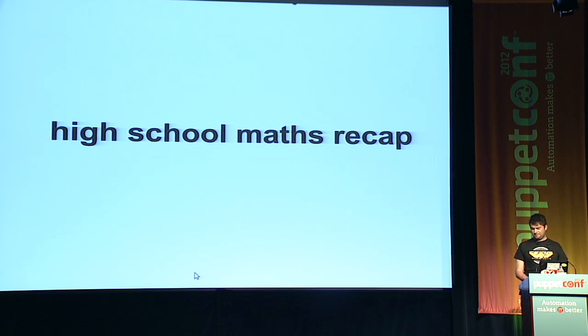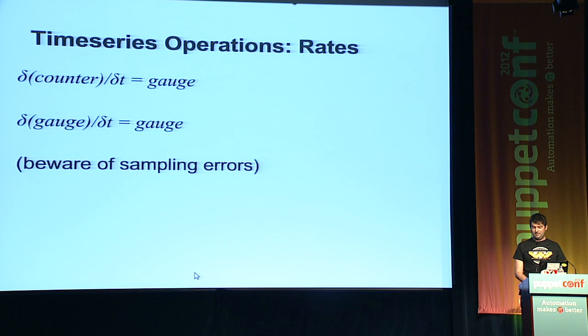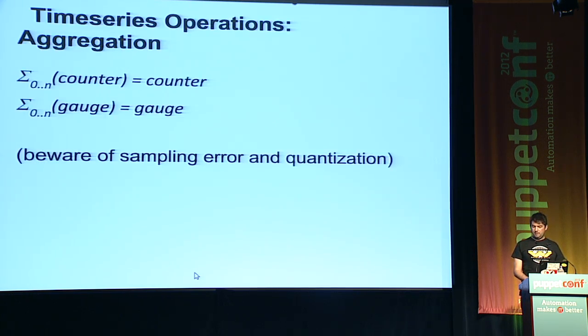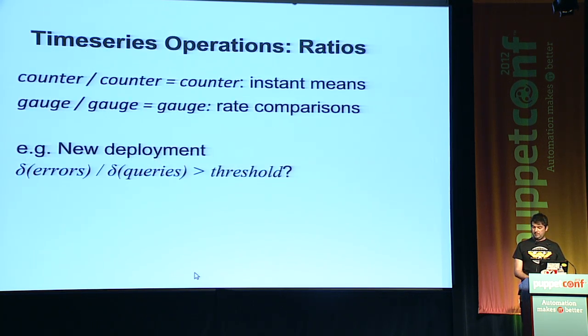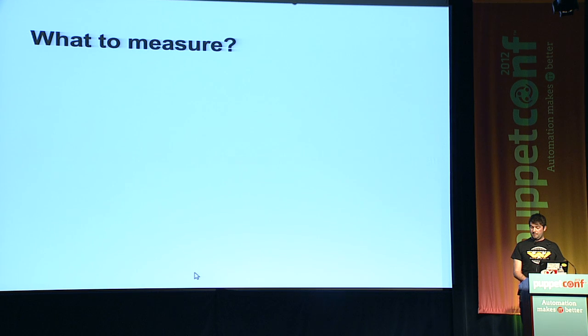So let's just recap all the high school maths. And I'm really sorry about this. Derivative of a counter turns into a gauge, a derivative of a gauge remains a gauge. Sampling errors can come to bite you when you're taking the rates of things. The sum of a counter remains a counter and the sum of a gauge remains a gauge. I didn't cover ratios before. Ratios are pretty cool. If you want to take the rate of change of errors and compare that to the rate of change of your requests, so know whether or not you're serving more errors than usual. Have you deployed a new system and it's starting to fail more often than the previous version?